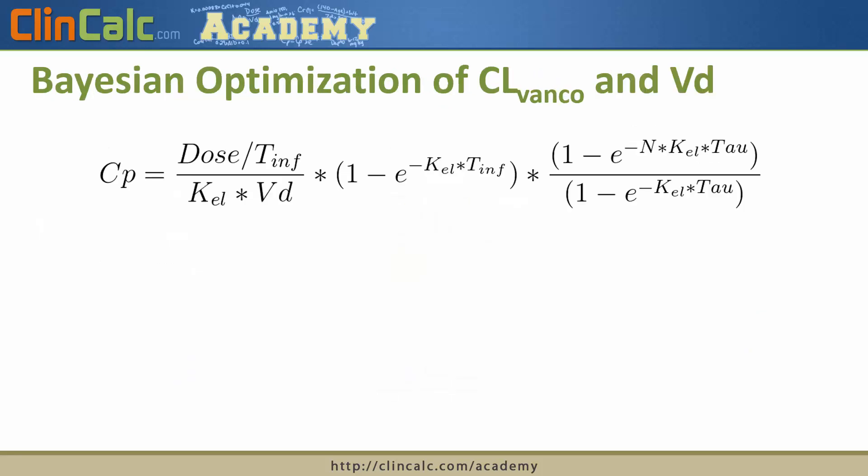You might be asking what math is involved or what is the process to figure out the most likely volume of distribution in vancomycin. With Bayesian modeling, you have a function or equation with a dependent variable — in this case a serum concentration — and any number of independent variables that you are either trying to solve for or are constants.